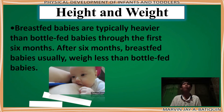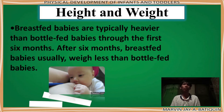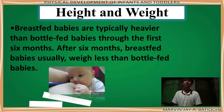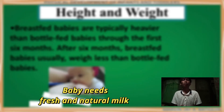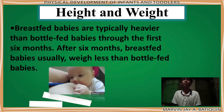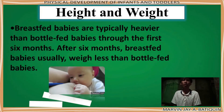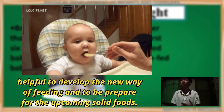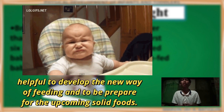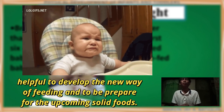Second, breastfed babies are typically heavier than bottle-fed babies through the first six months. After six months, breastfed babies usually weigh less than bottle-fed babies. It is very important to perform breastfeeding for the first six months, because the baby needs fresh and natural milk. Breastfeeding provides natural antibodies that help resist illnesses such as ear infections. Newborn babies should not be bottle-fed, according to many doctors. Bottle feeding can be accepted after six months, as it helps develop a new way of feeding and prepares the baby for upcoming solid foods.